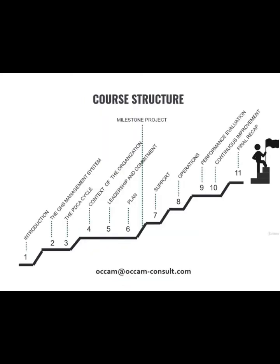As for the course structure, you may see here your global path, which is made of 11 chapters and one milestone project at the middle. The course starts with Chapter 1, which is an introduction chapter. It includes this overview, a discussion of what a certification is, and guidance on how to best approach this course to maximize your benefits. In this first chapter, we will also learn about certifications and the certification cycle.